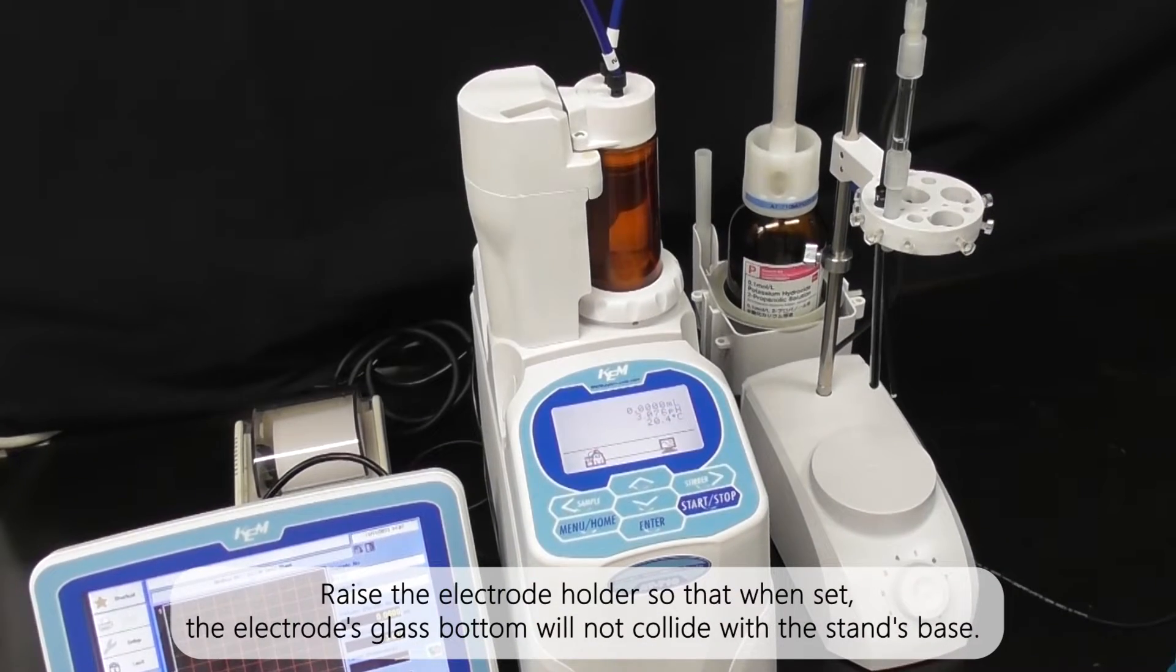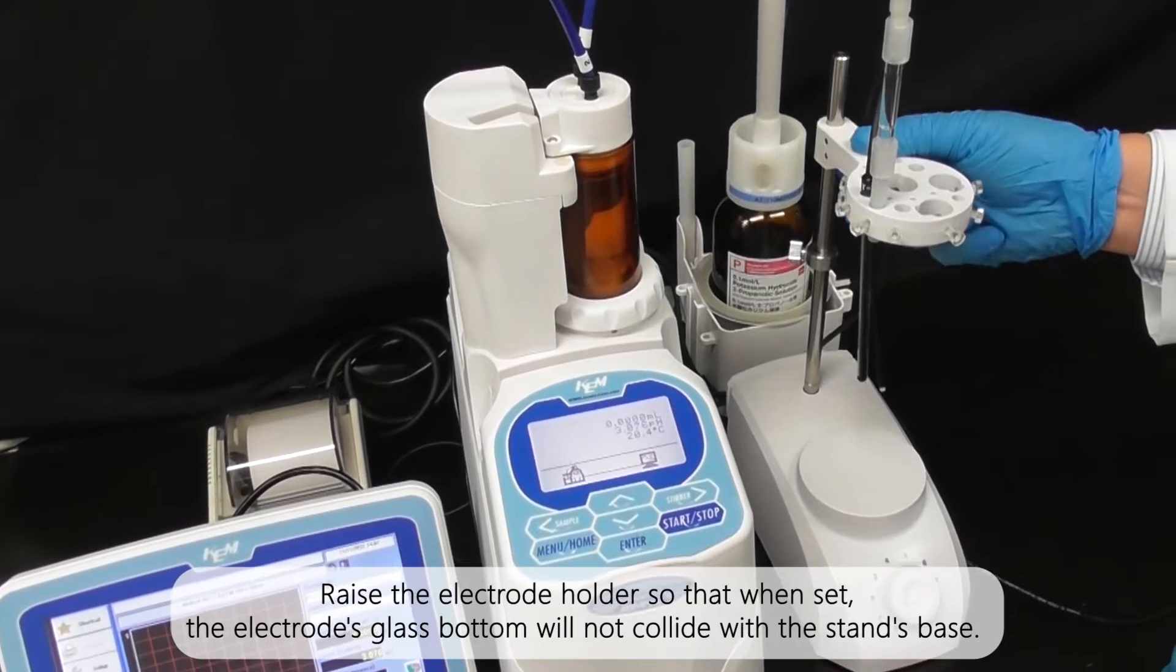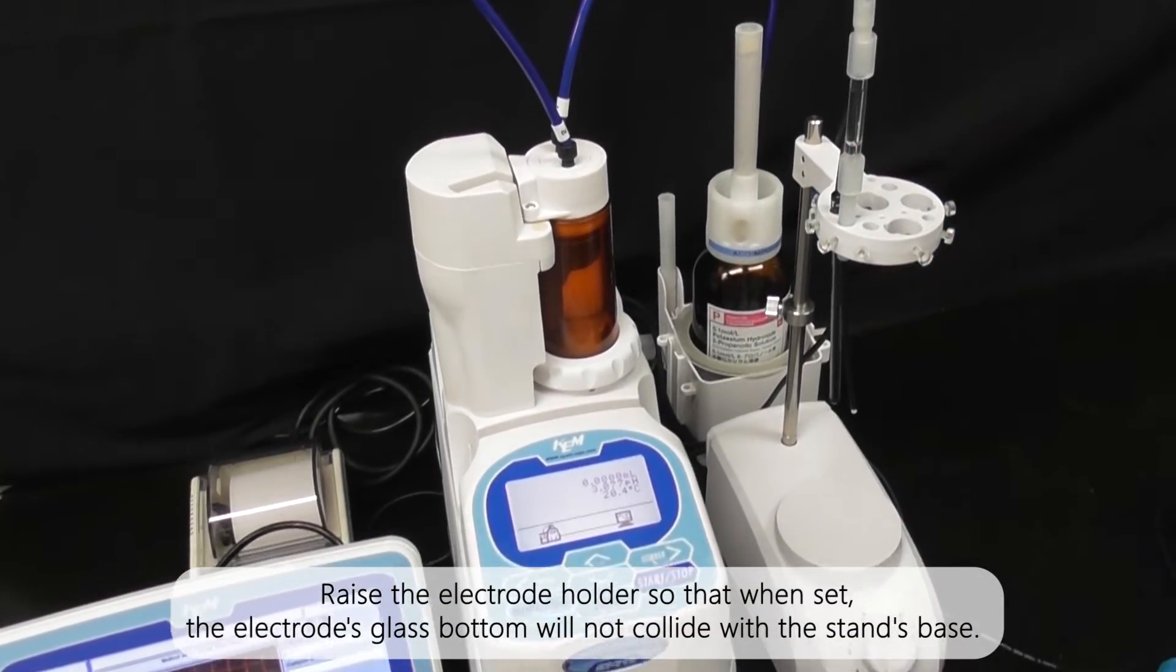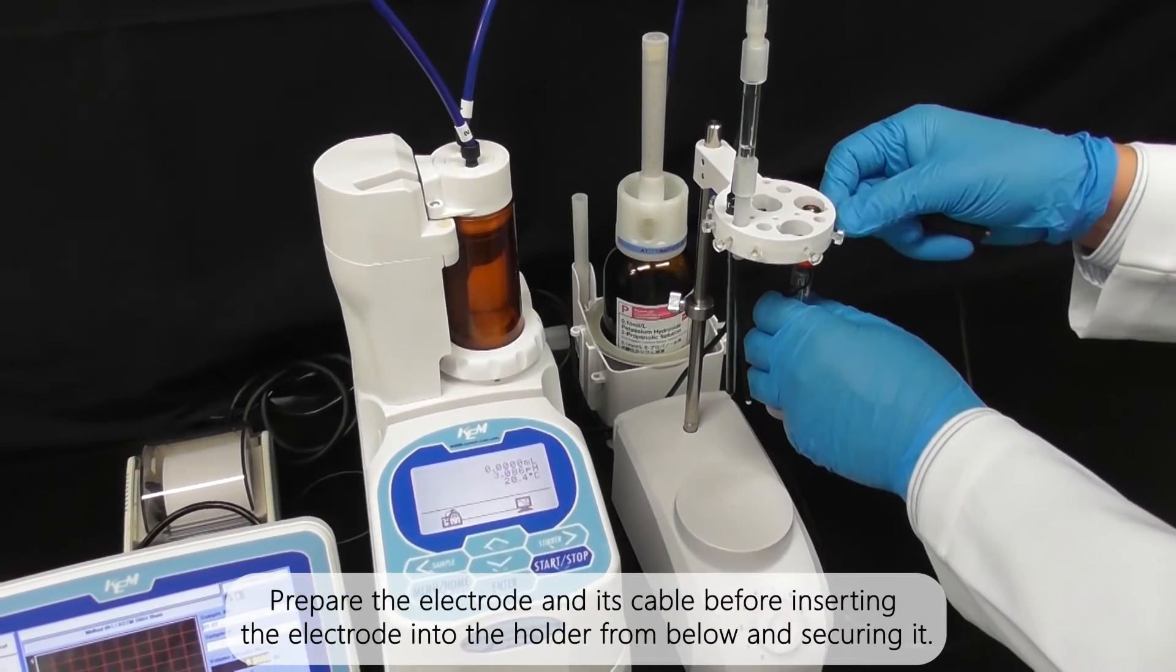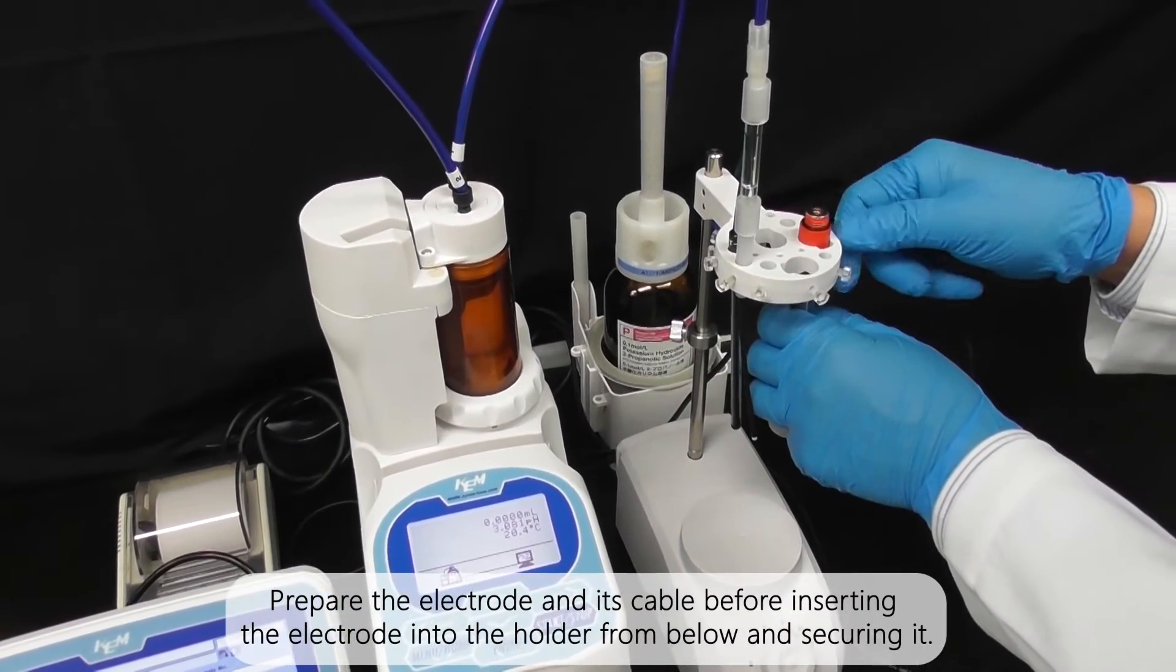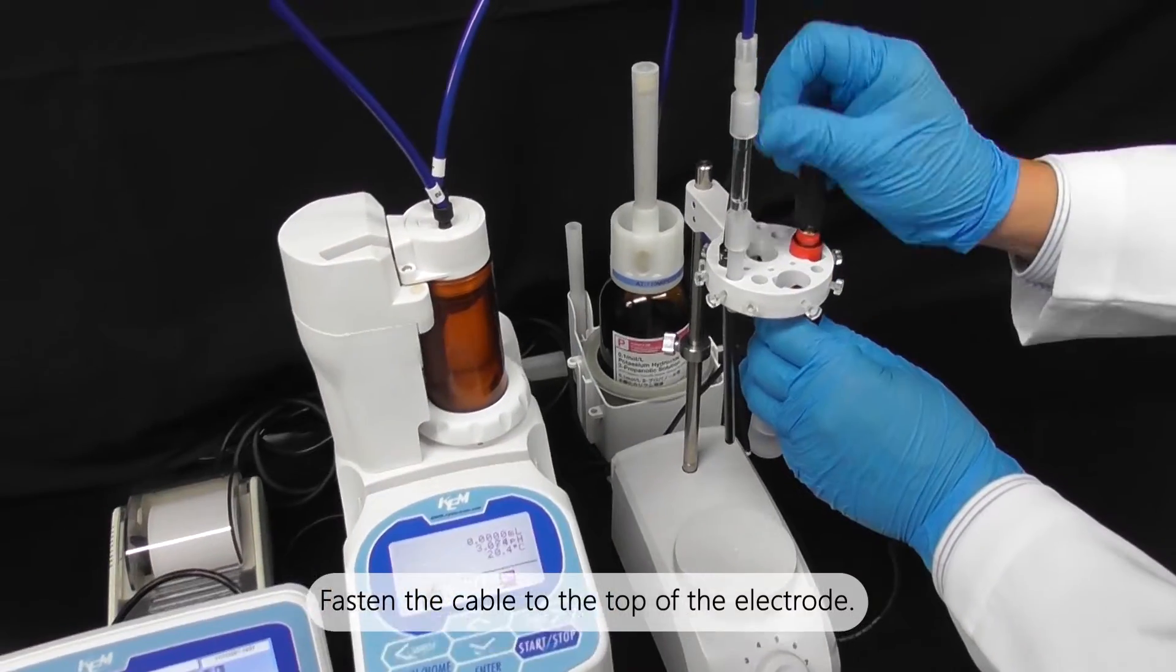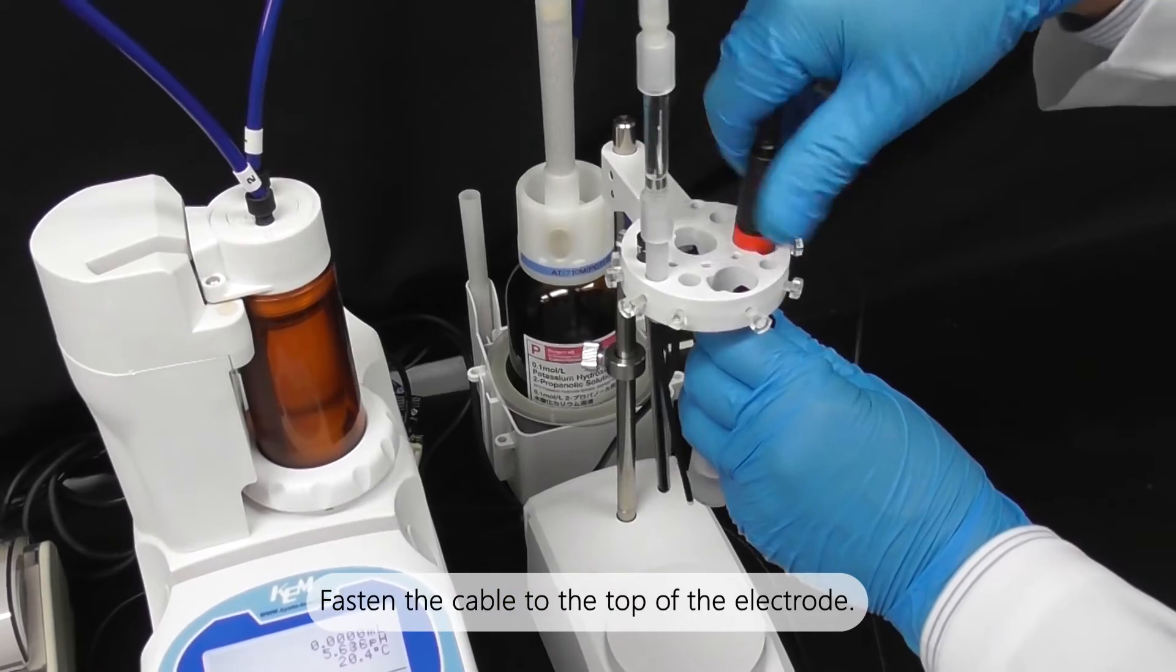Raise the electrode holder so that when set, the electrode's glass bottom will not collide with the stand's base. Prepare the electrode and its cable before inserting the electrode into the holder from below and securing it. Fasten the cable to the top of the electrode.